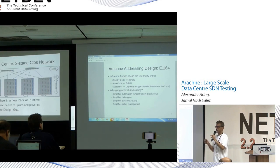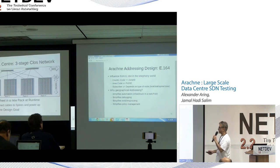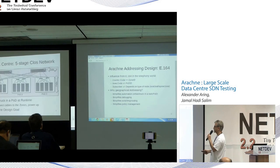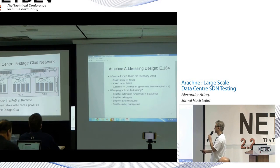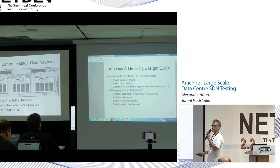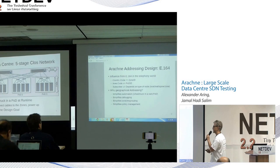We decided we want to adapt geographical addressing for automation purposes. It helps us build that rack and just plug it in, and everything works. We could say this pod structure is a country, or a zone, or a city. So the country code maps to a zone ID, the area code maps to the pod, and the subscriber number maps to one of these servers. Cables in this case are VETHs — and boom, it just works.